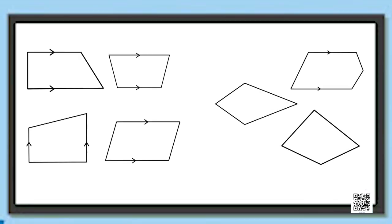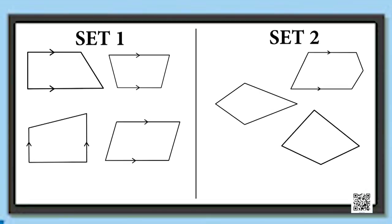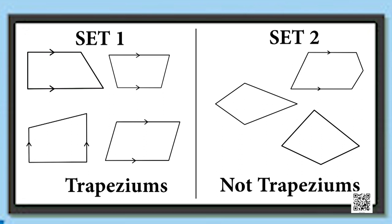Look at the two sets of figures. Is there a difference between the two sets? All the quadrilaterals in set 1 have one pair of opposite sides which are parallel, and the other pair of opposite sides are not parallel. Whereas in set 2, this condition does not hold good. A quadrilateral with one pair of opposite sides parallel is called a trapezium. Hence all the quadrilaterals in set 1 are trapeziums, but all the figures in set 2 are not trapeziums.